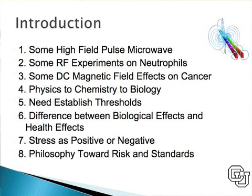You have experiments and papers that show effects, and you have experiments and papers that don't show effects. One of the key things that's lacking is experiments that show: I have effects at these levels under these conditions, and if I change the parameters, I don't have effects at these levels. We need to know how to define these boundaries if we're going to understand what's going on.